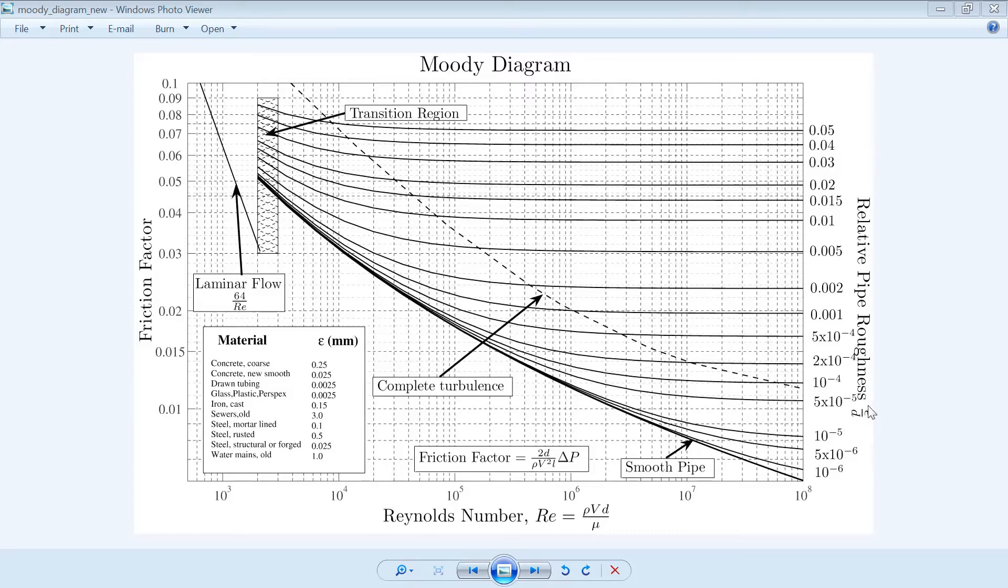All commercial pipes have available information on the relative roughness of the pipe. You divide by the diameter, so e/D. For example, let's say you find 10^-4, or 0.0001.